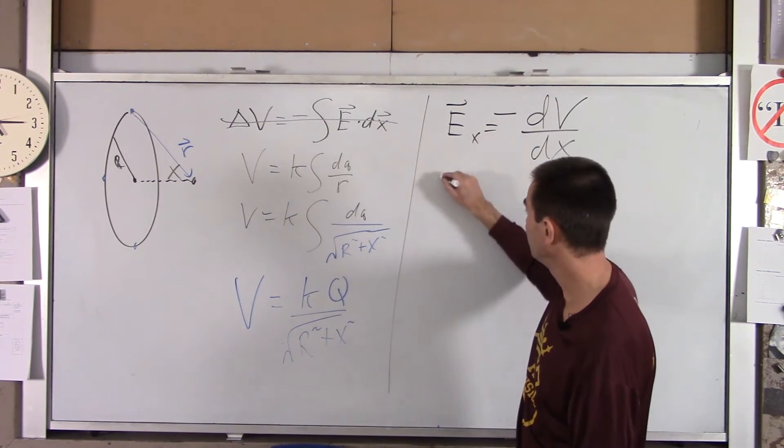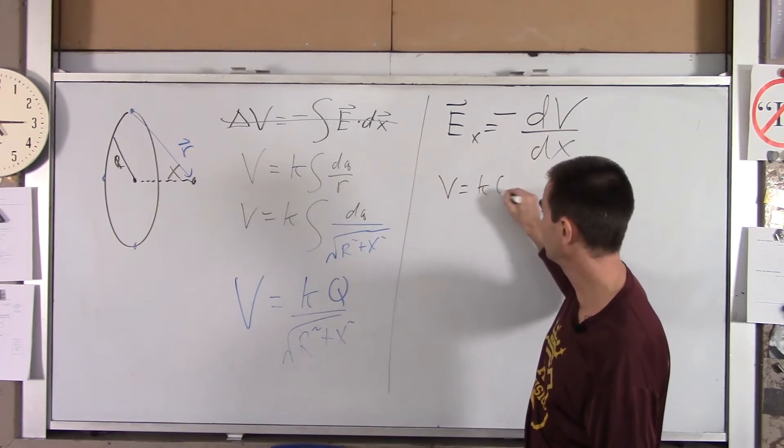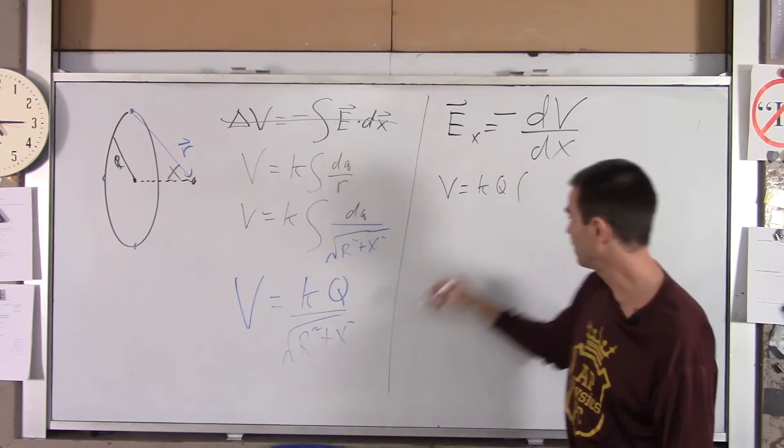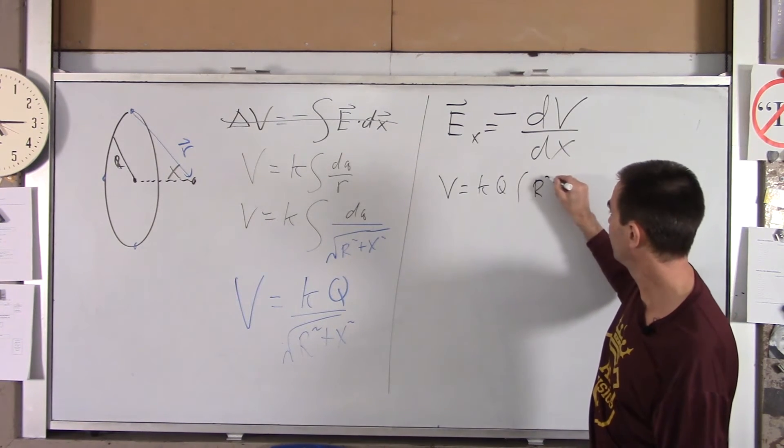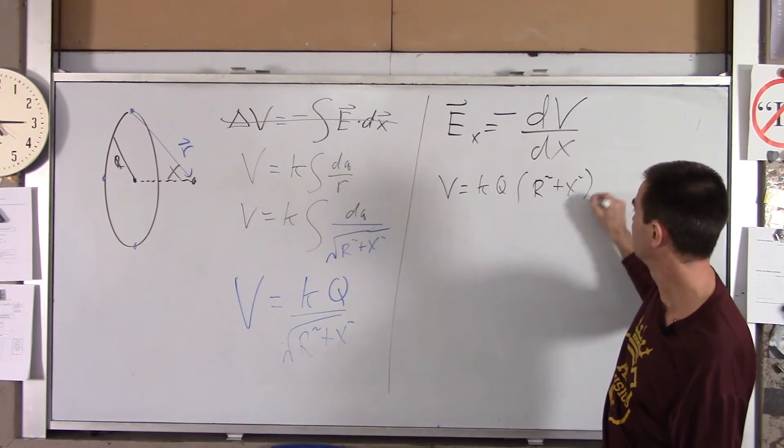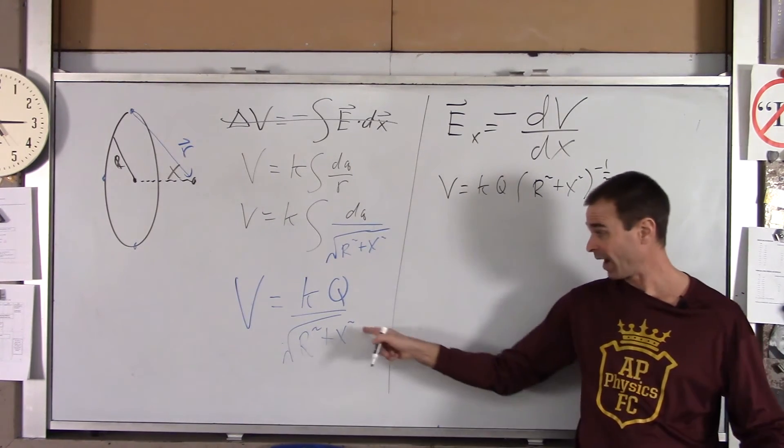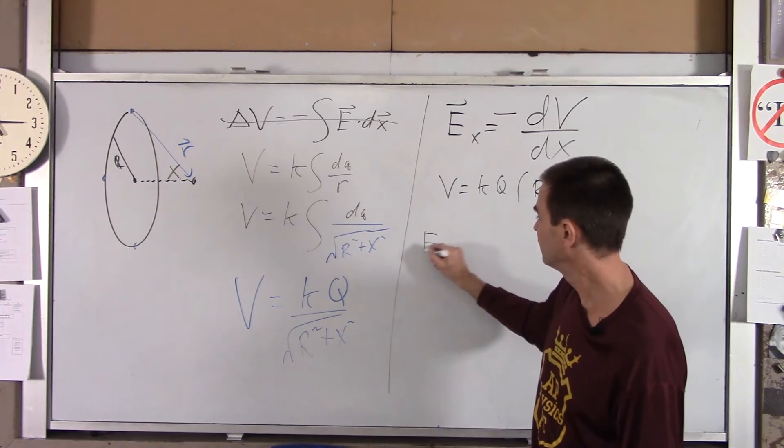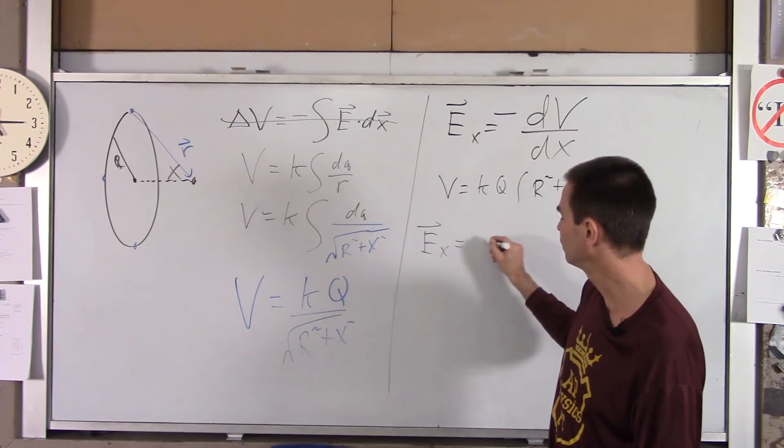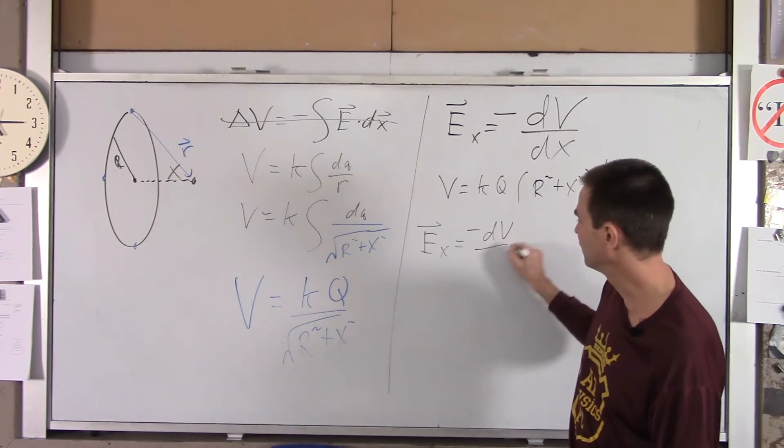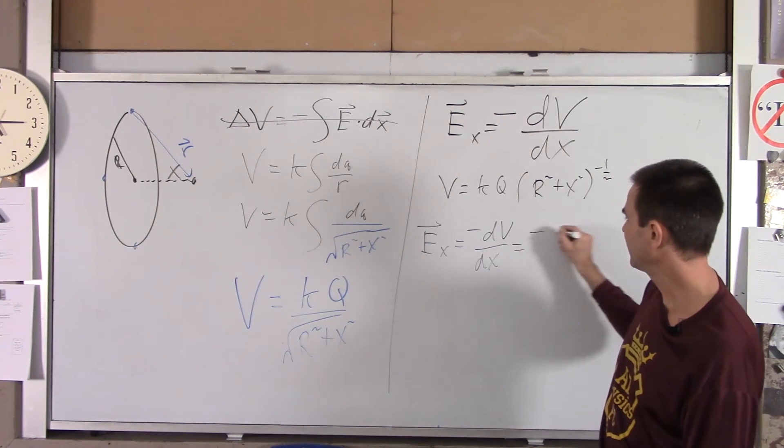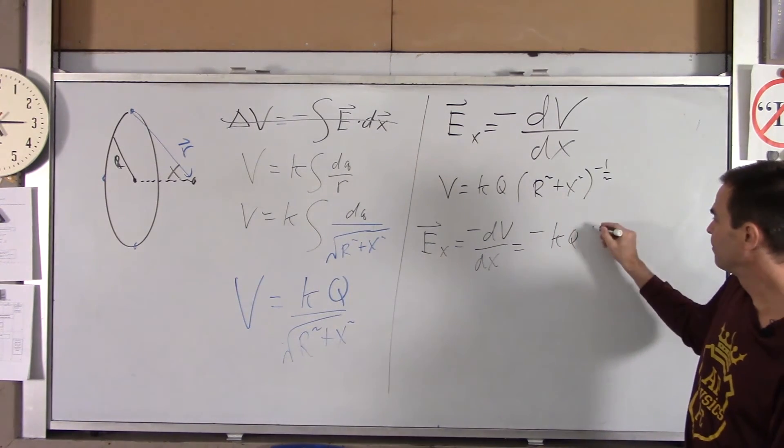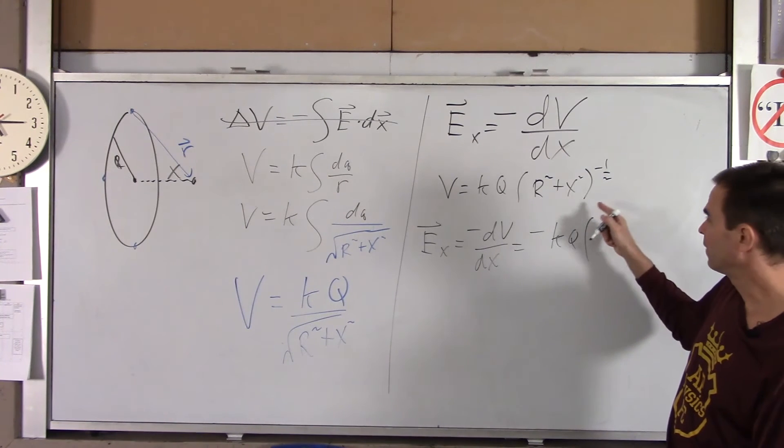So, all we got to do is take the derivative of this with respect to X. Now, what I'll do is I'll rewrite this. Voltage equals KQ. That's a constant. And then, this becomes R squared plus X squared to the negative one-half. So, that's just rewriting this in a nice, easy version. If I do E in the X direction, which is negative DV, DX, you get negative KQ.